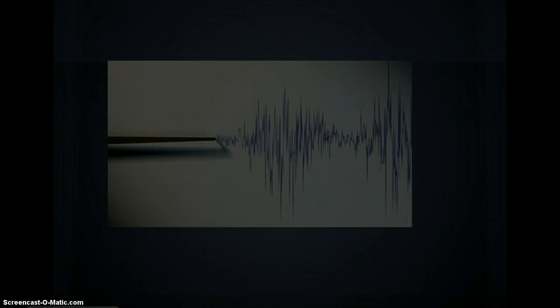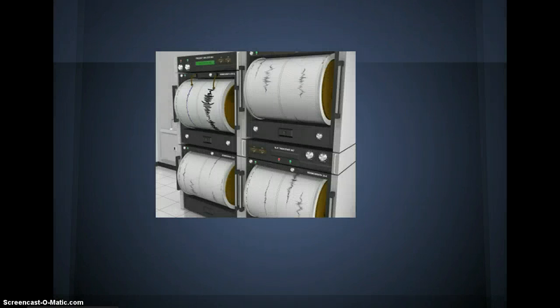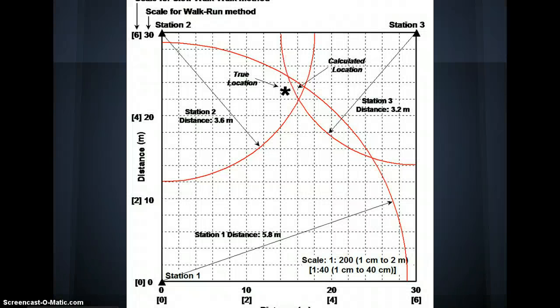Differences in arrival times between the two waves will help us figure out the distance to the earthquake's epicenter. With three seismographs in different locations, we can plot circles around the seismographs. Where all three circles intersect is where the epicenter is.